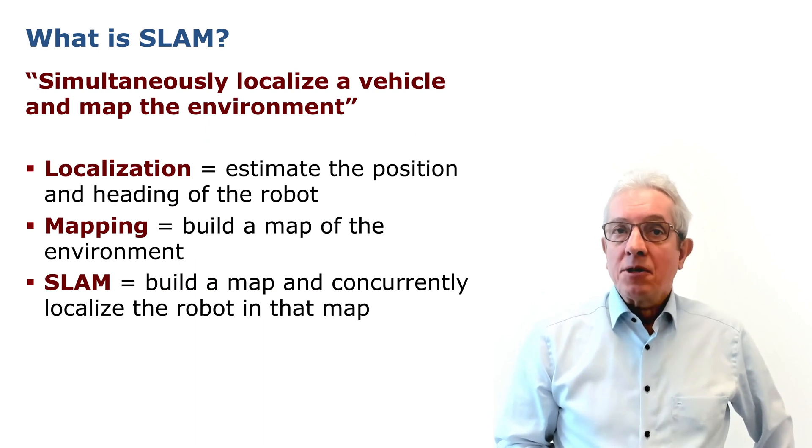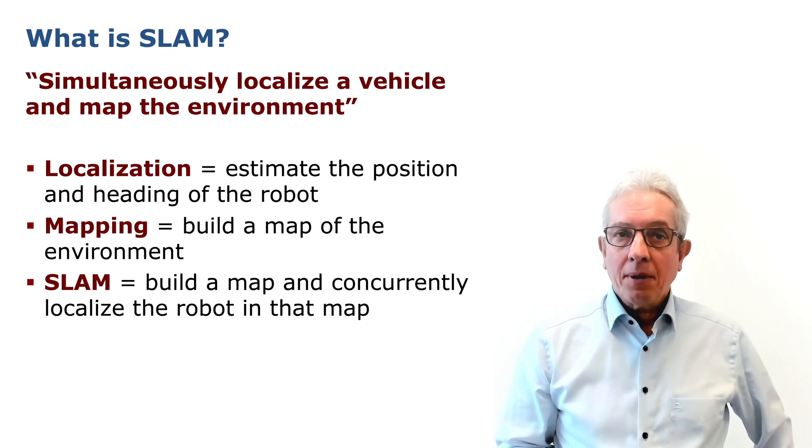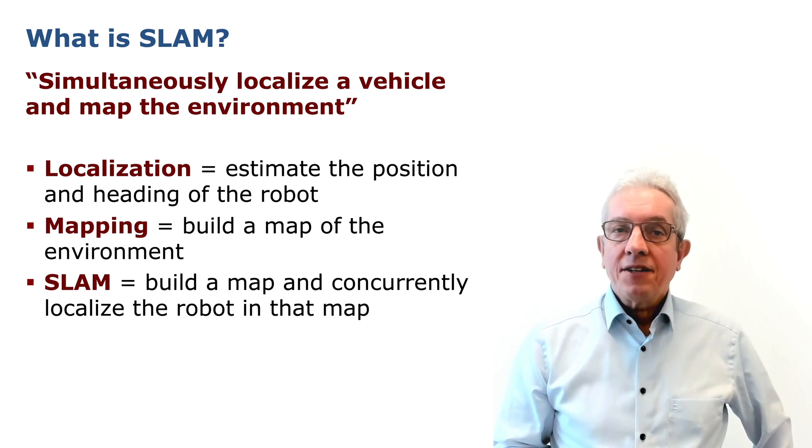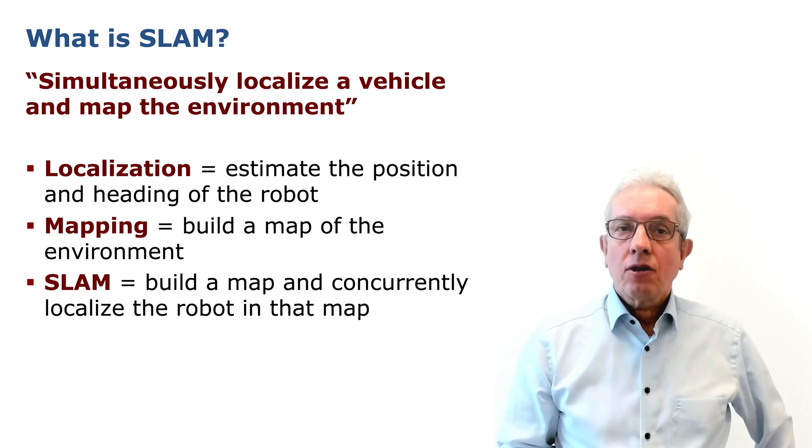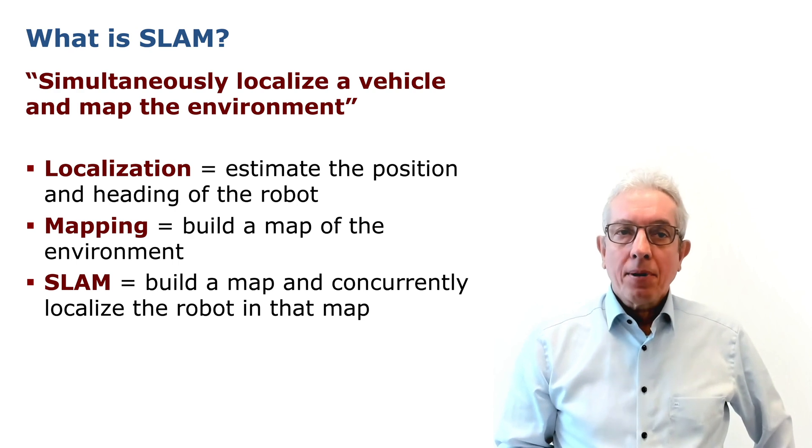SLAM is called simultaneous localization and mapping. Here, localization means estimating the position and the heading or the pose of the robot. Mapping means building a map of the environment, and in SLAM, we need to do both at the very same time.